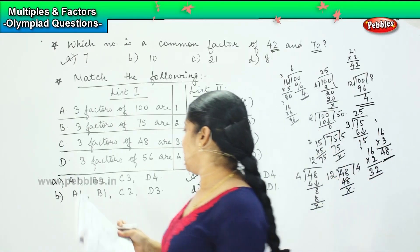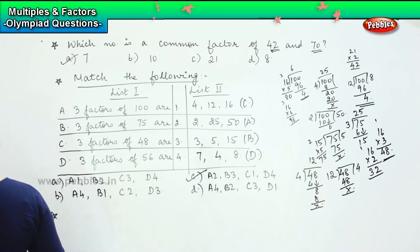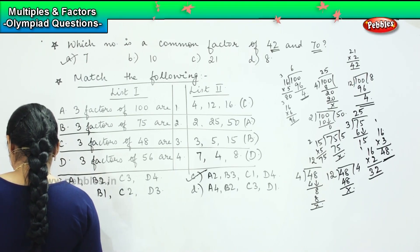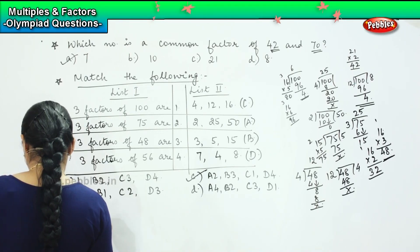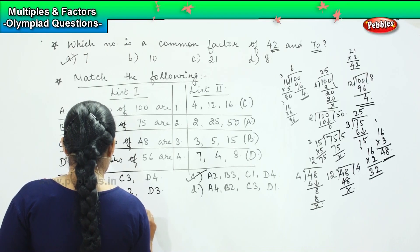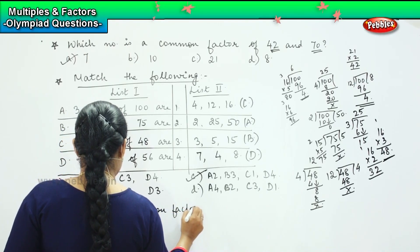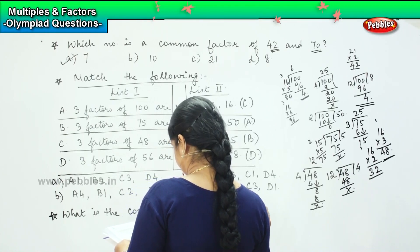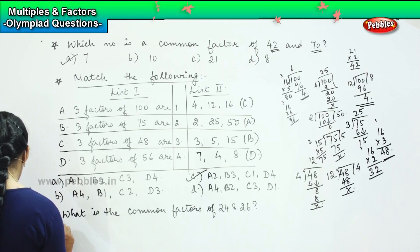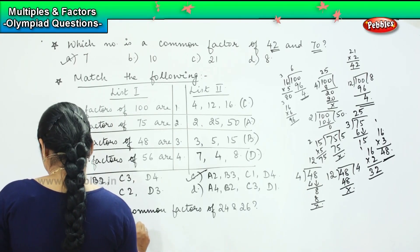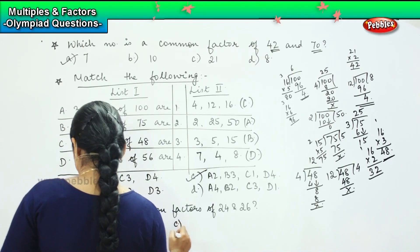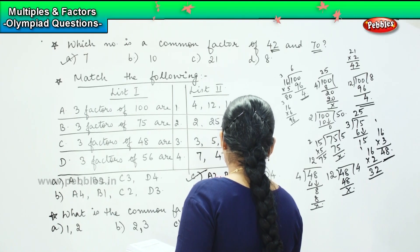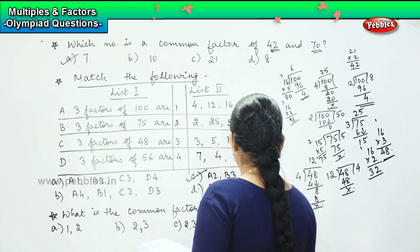Here is your next question. The question says: what is the common factor of 24 and 26? Your options are: option A: 1, 2; option B: 2, 3; option C: 2, 3, 4; and option D: all of these.